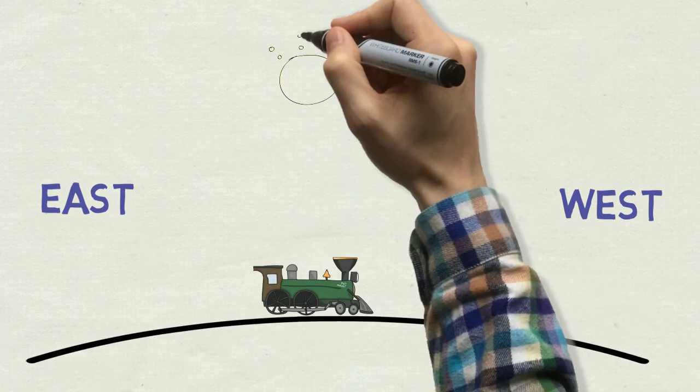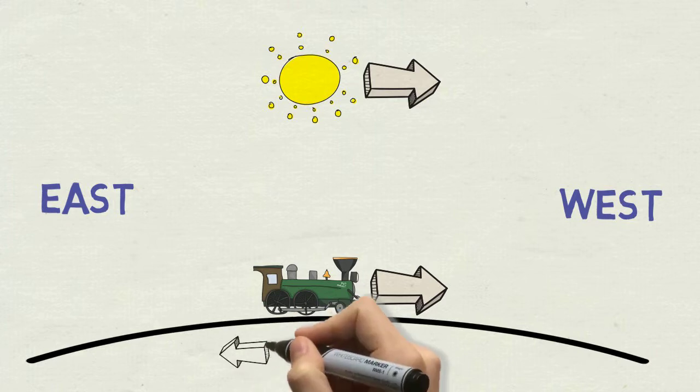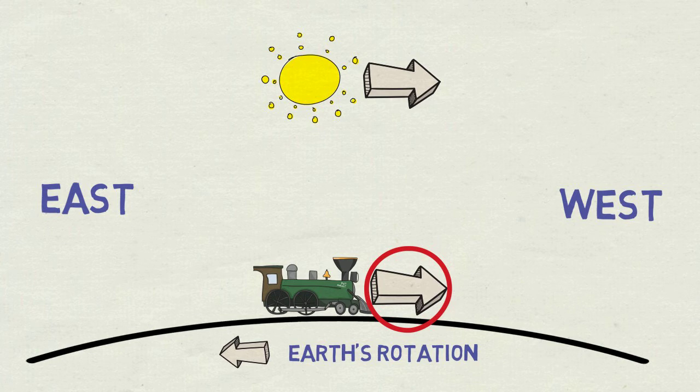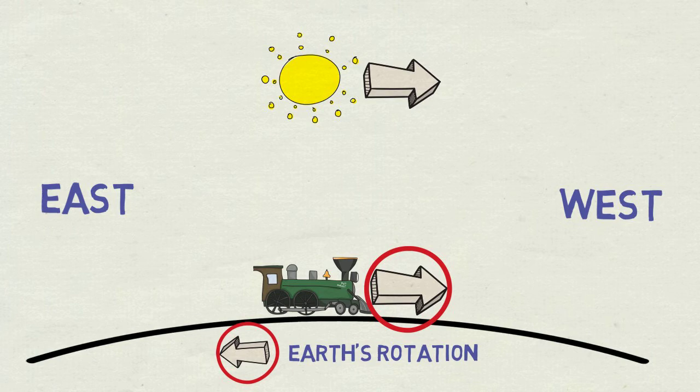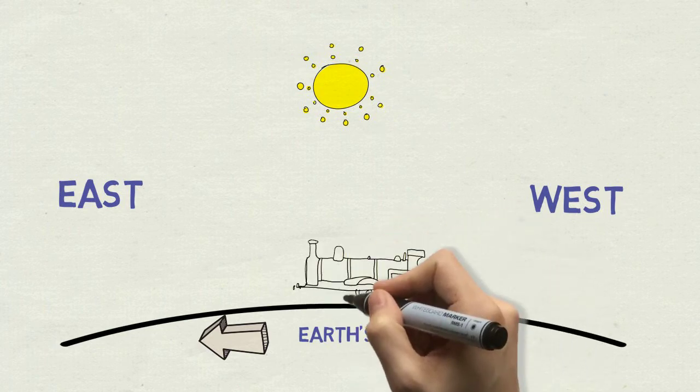Westbound train will be travelling pretty much along with the sun on the sky. In other words, the Earth rotates eastwards, so train going west with the same speed will cancel that effect. For an observer on the sun, it would look as if the Earth was rotating under stationary train.